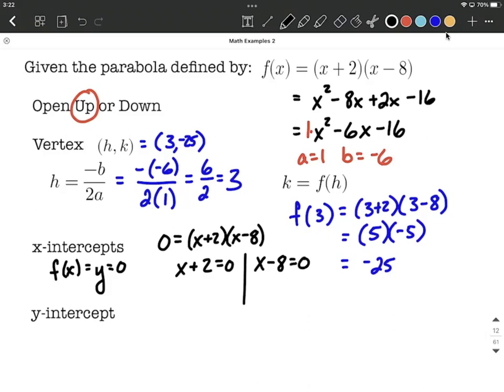Treat them like separate equations here and solve them down. So on the first one, I'm going to subtract 2 from both sides. On the other one, I'm going to add 8 to both sides. And those are our x-intercepts.